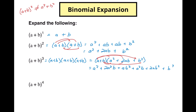Now let's simplify our like terms. We get a cubed — I made a mistake up here, this is supposed to be a cubed. So we have a cubed, plus 2a squared b and another a squared b gives us 3a squared b, then 3ab squared, and 1b cubed.